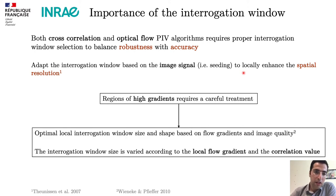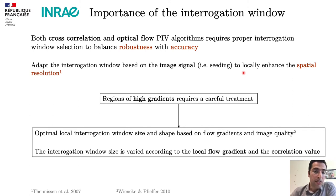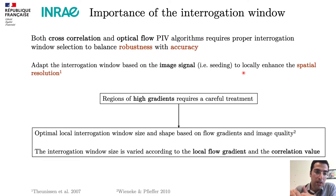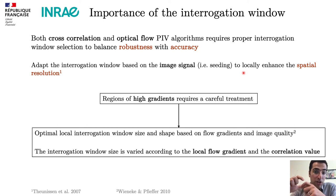We have seen that Winnaker proposed that you can shape the window based on image quality — the image signal, based on correlation values, and also based on local flow gradients, especially in shear regions.